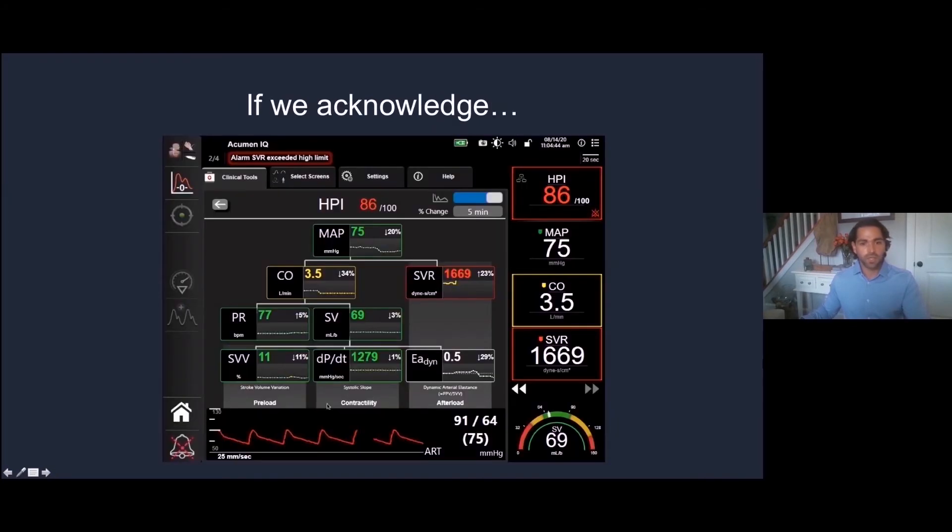Our secondary screen is this simulated screen. This is exactly what you're going to see on your device. It's going to break down the factors of hypotension. We can see here an HPI of 86, our MAP of 75. We've got two arms of this decision tree. Your SVR, your systemic vascular resistance at about 1,700.